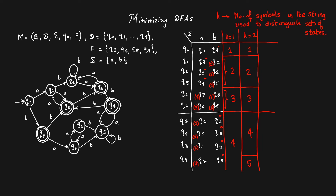For k=3 (words of length 3), we refer to the k=2 column. Partition 1 has one state — cannot split. In partition 2, all three states still go to the same partitions on 'a' and 'b' — cannot split. Partition 3: q6 and q7 still go to partition 3 on 'a' and partition 2 on 'b' — cannot split. In partition 4, states on 'a' all go to partition 2 and on 'b' all go to partition 4 — cannot split. Partition 5 has only q9 — cannot split. The set of partitions remains the same as k=2, so we stop.